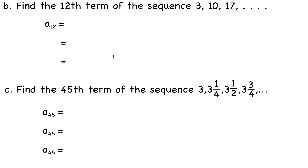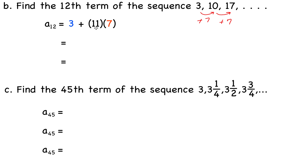Here are a couple more. Find the 12th term of the sequence 3, 10, 17. From 3 to 10 is up by 7, and from 10 to 17 is also up by 7, so the common difference d is 7 and the first term is 3. A sub 12 equals 3 plus 12 minus 1 times 7, so 11 times 7 is 77, and adding 3 gives 80. So a sub 12 is 80.